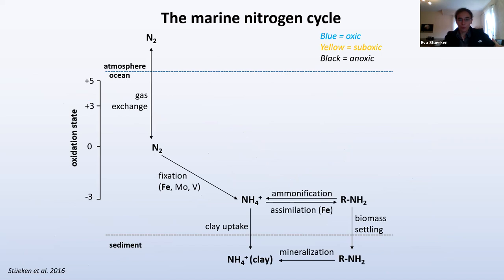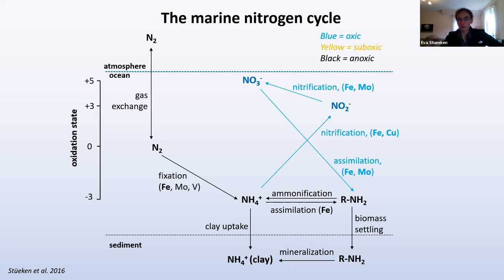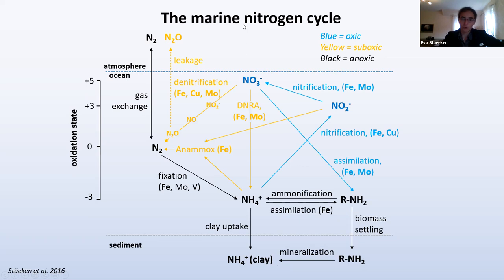We can express the nitrogen cycle in terms of redox: nitrogen gas gets fixed into ammonium within cells, then converted into organic biomass, which can become clay-bound ammonium in sediments. As soon as you turn on oxygen — even at very low levels — you turn on nitrification to nitrite and nitrate. Once nitrate is available, you can start to denitrify it back to N2. If nitrite is available, you can use the Anammox pathway and also produce N2. These are the pathways that affect the net output of the nitrogen cycle in sediments.